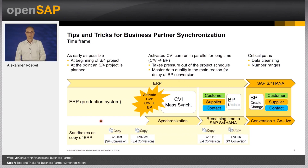We are often asked how much time is required to execute the business partner synchronization. Well, there is no fixed answer to this question. We recommend starting as early as possible once you have decided to go for an S4HANA conversion. We always try to prevent having the CVI topic on the critical path for your S4HANA project, because the CVI project has the potential to extend the timeline. There could be several reasons for this — for example, data quality issues that are only detected during project runtime.